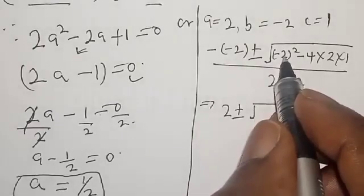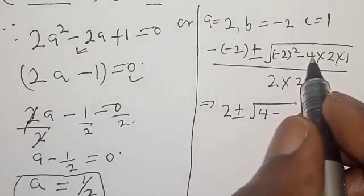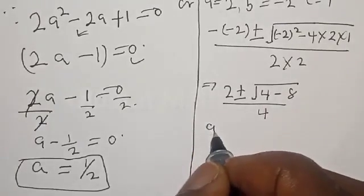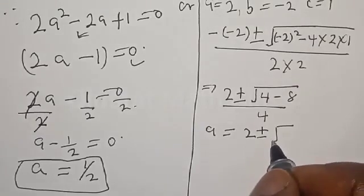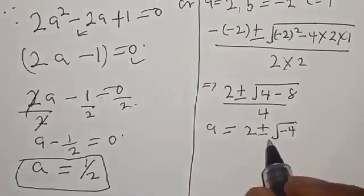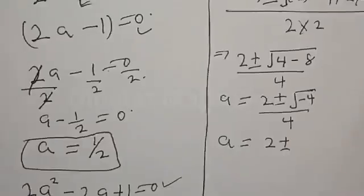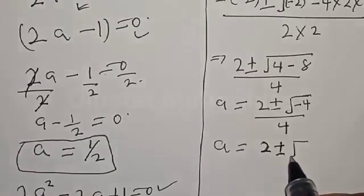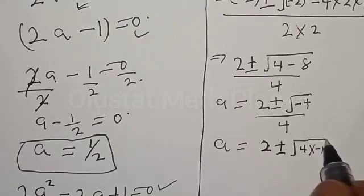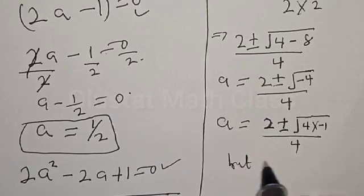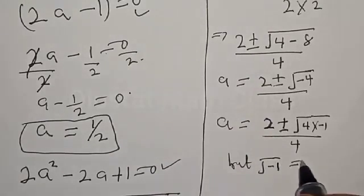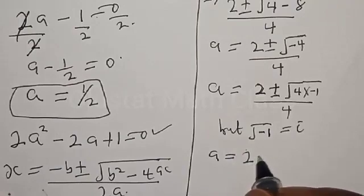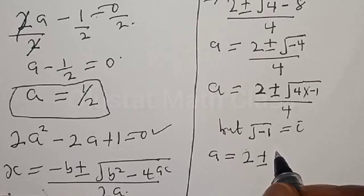That gives us: 2 plus or minus square root of (minus 2)² — which is 4 — minus 4 times 2, which is 8, all over 4. So a equals 2 plus or minus square root of (4 minus 8) over 4, which is 2 plus or minus square root of minus 4, over 4. We can write this as square root of 4 times minus 1, over 4.